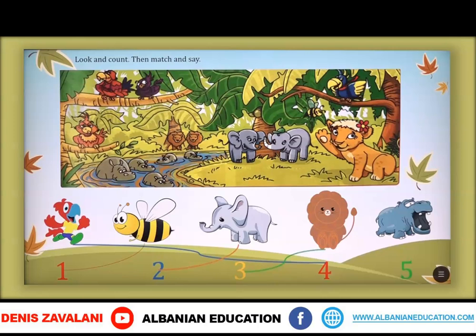What about hippos? How many hippos are there in the photo? One, two, three, four, five. There are five hippos in the photo. Këtu kemi pesë hipopotamë në fotografi. Let's match the hippo with a number. Five.